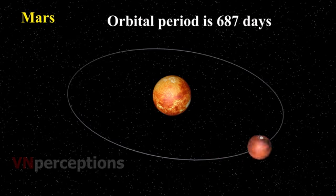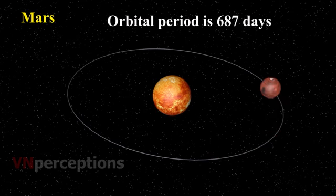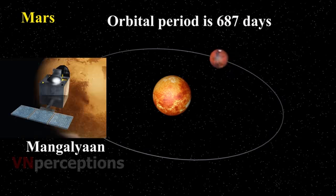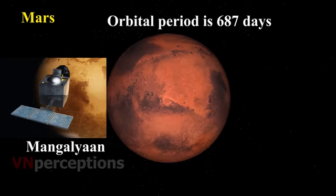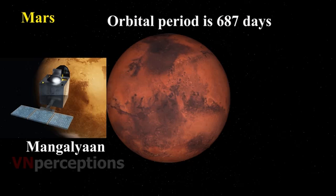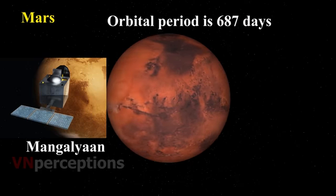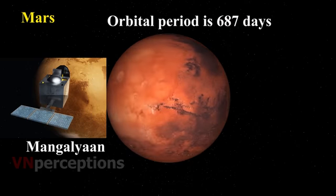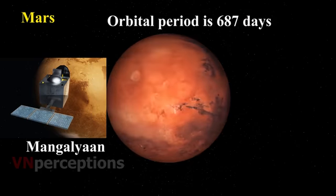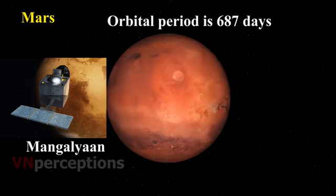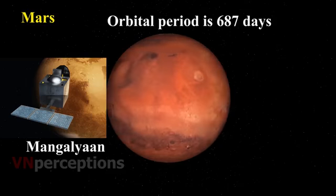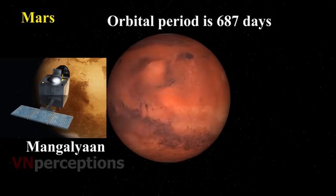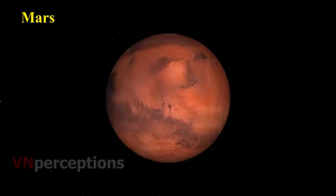Indian Space Research Organization launched India's first Mars orbiter mission, that is Mangalyaan, on November 5th, 2013. It was successfully placed into an orbit of Mars on September 24, 2014. With this, India became the first country in the world to do so in its first attempt.